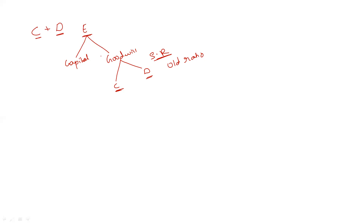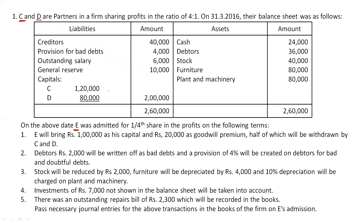Before starting the journal entry process, we have to check whether there are any undistributed profits or losses given in the question. If there are any undistributed profits or losses before the admission of the partner, they have to be distributed among the existing partners. So first, let me read out the question. C and D are partners in a firm sharing profits in the ratio of 4:1. On 31st March 2016, the balance sheet was as follows. This balance sheet is before admission of the new partner.